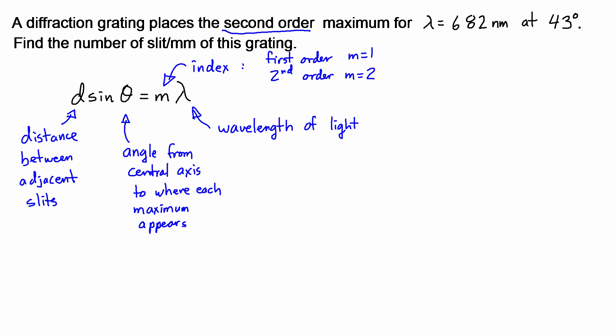In terms of units, d, the distance between adjacent slits, I would recommend working with everything in meters because it just helps keep things consistent. Converting from nanometers to millimeters isn't hard, but it's just more intuitive if you're used to working with everything in meters to keep it in meters.